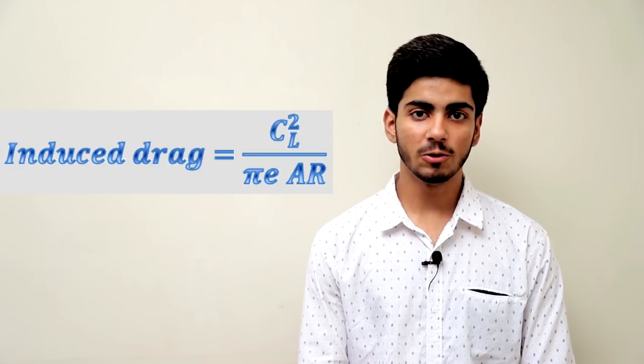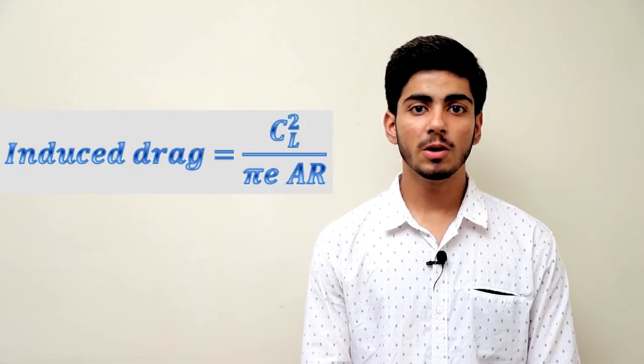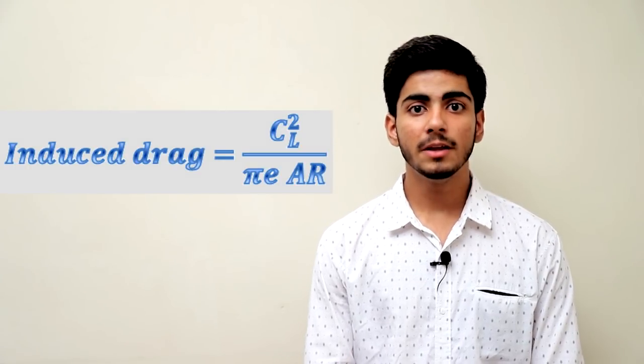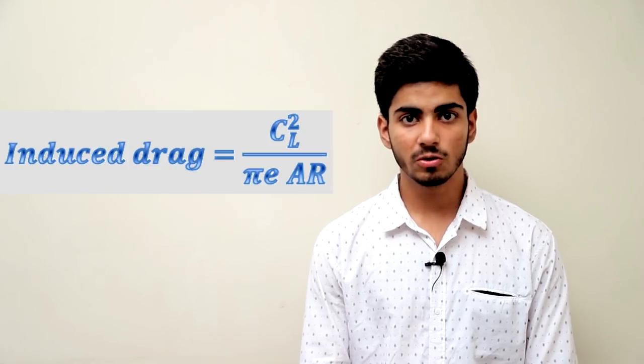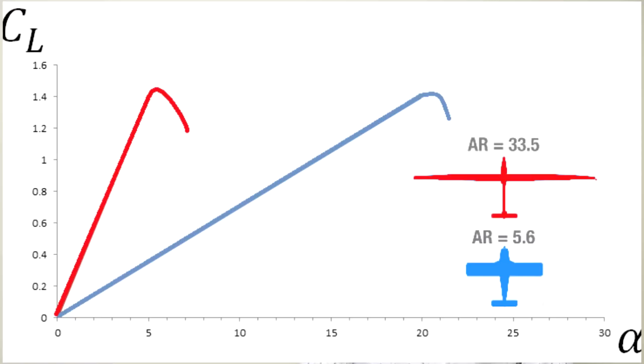Drag is an aircraft designer's worst enemy and it is related by an inverse of aspect ratio. So if the wing has a larger aspect ratio, then the induced drag is reduced significantly.